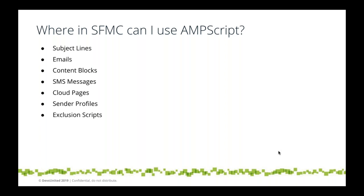Exclusion scripts are a really good strategy — in an email send definition there's a text box for exclusion script. If you type an AMPscript if statement and that statement is true, it's going to exclude that person from getting the email. I see it used for frequency capping — avoiding people getting more than a certain number of emails in a day — and for real-time validations right before a send.